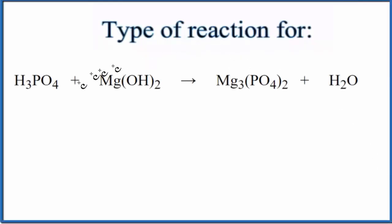In this video, we'll look at the type of reaction for H3PO4 plus Mg(OH)2. The first thing I notice when I look at this equation is I have water over here, and then I have a metal and a group of nonmetals. This is an ionic compound, also called salt.